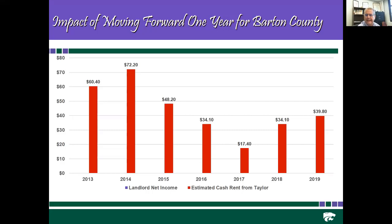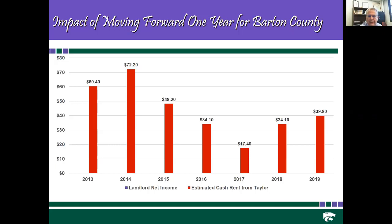If you look at the estimated cash rent — the ability to pay cash rent out of earnings that Michael Taylor calculates each year — in Barton County, in 2013 that was $60; 2014, it was $72; then $48, $34, $17. It recovered in 2018 and 2019 to $34 and $40.